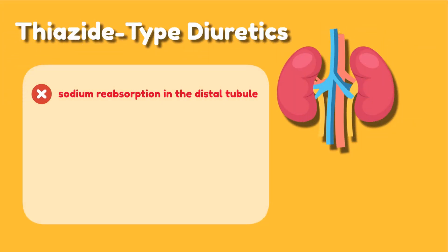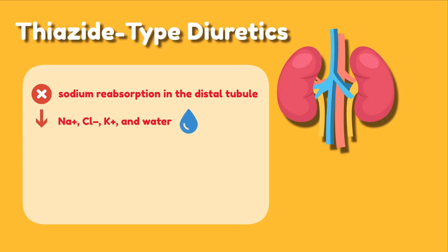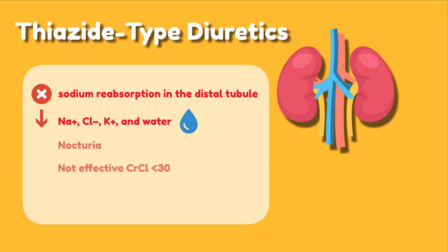Thiazides inhibit sodium reabsorption in the distal convoluted tubules, causing increased excretion of sodium, chloride, water, and potassium, which is why they are recommended to be taken in the morning to avoid nocturia. It is also worth noting that thiazides are not effective when creatinine clearance is less than 30.